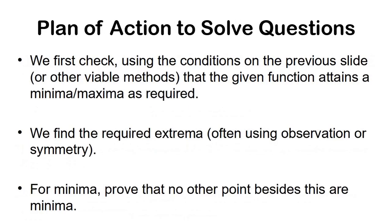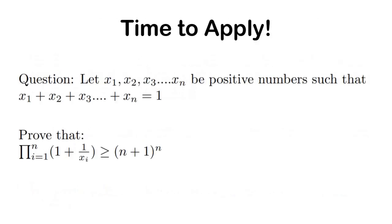Now how exactly do we solve questions using this? We first check using the conditions on the previous page or other viable methods that the given function attains a minima or maxima. So we need to prove that it attains a minima or maxima. After that we hypothesize that a given point is the required minima or maxima, which we often find using observation or symmetry. And then, for example for the minima, we prove that no other point besides this specific point is a minima. How exactly do we do that?